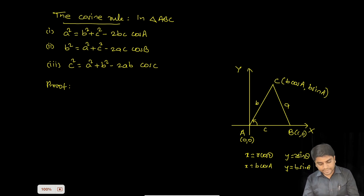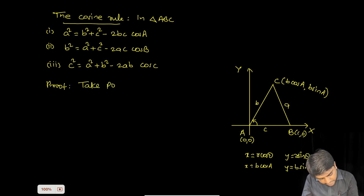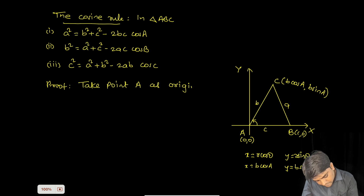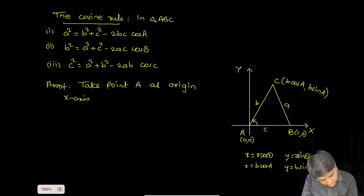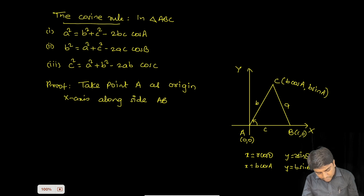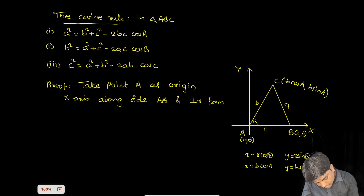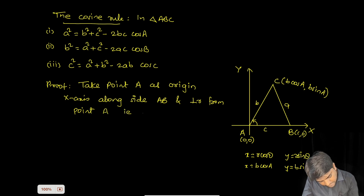So to summarize the setup: take point A as the origin, the x-axis along side AB, and the y-axis perpendicular from A.